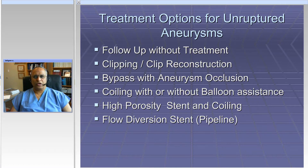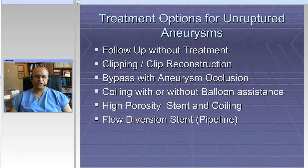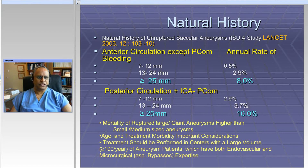When we talk about unruptured aneurysms, you have more options. The bigger option for some complex aneurysms is the placement of a stent with coils or a flow diversion stent, namely the pipeline embolization device. Clip reconstruction and bypasses are also options for unruptured aneurysms.